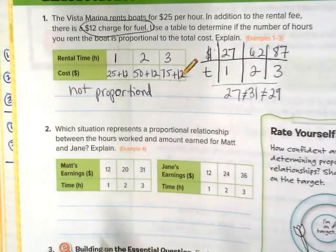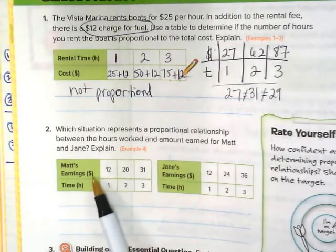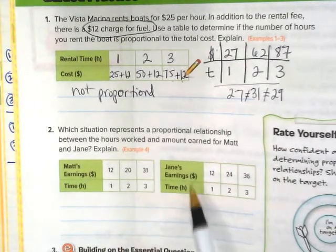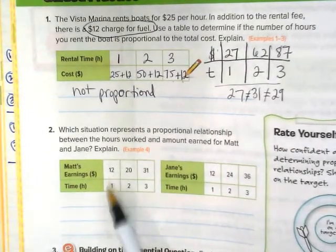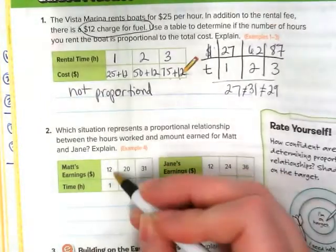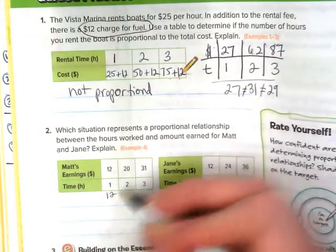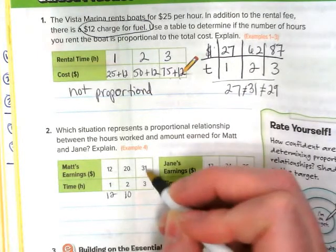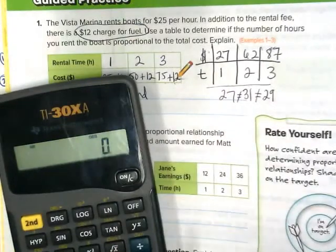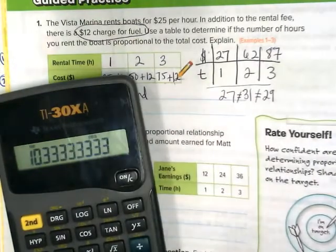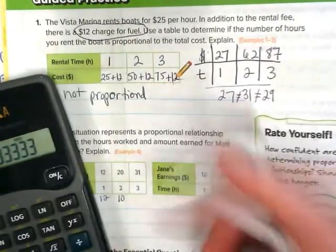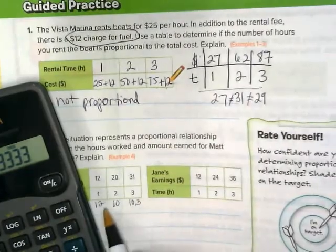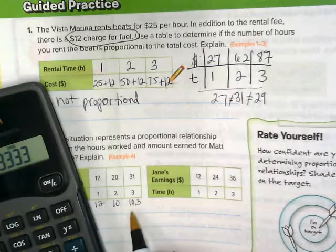Take a look at number 2. Notice they have this set up correctly for us. We have money over the time. We always want to see money up above. And let's divide. 12 divided by 1 would be 12. 20 divided by 2 would be 10. 31 divided by 3 is going to be a decimal. And I get 10.3 repeat. Those don't look proportional because I'm not getting a nice unit rate.